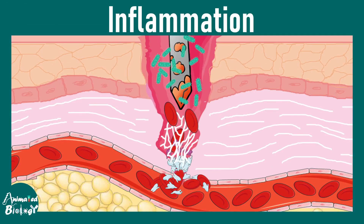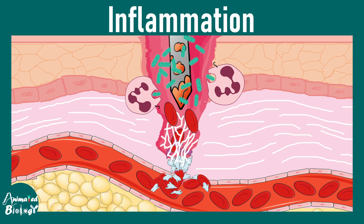Leukocytes are white blood cells that infiltrate a tissue post injury or infection. During inflammation — imagine a rusty nail bringing in a lot of bacteria at the wound site — leukocytes like neutrophils would immediately try to go to that location and engulf the bacteria. This process is known as phagocytosis.